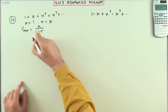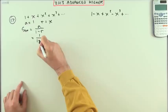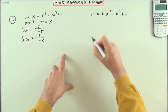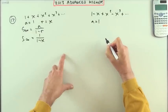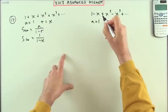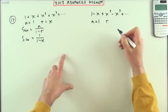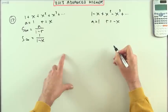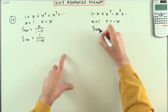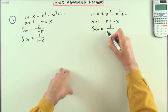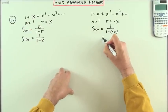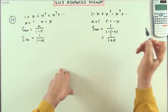For this one, same again, first term is one, but this time you're multiplying by a negative—notice the alternating signs. So r is -x, and the sum to infinity will be 1/(1+x).